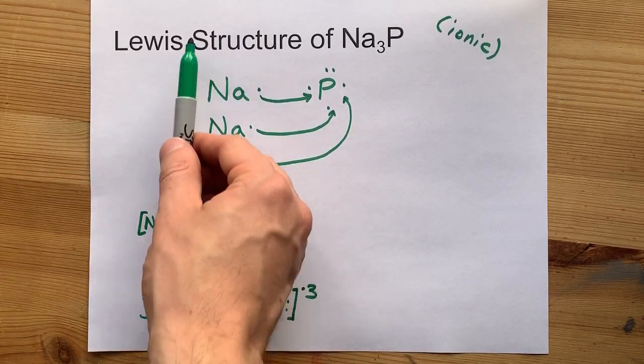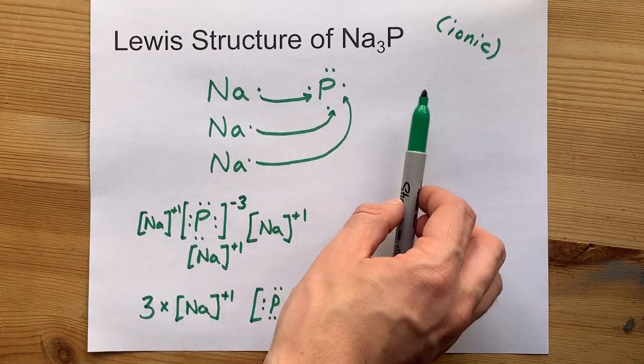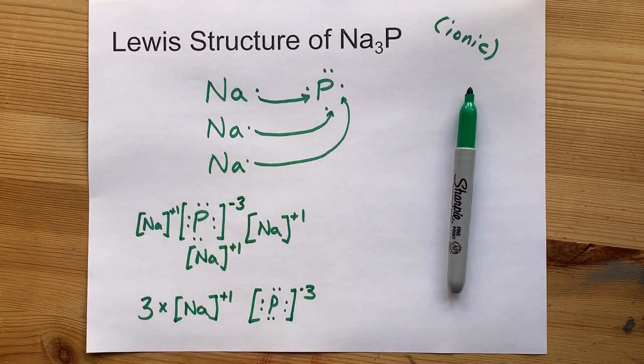Either of these are valid Lewis structures, though, for sodium phosphide. Thanks for being here with me, and best of luck.